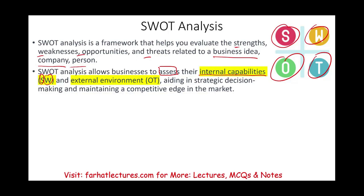Strengths and weaknesses are internal capabilities of the business, while the external environment — looking at opportunities and threats — represents the external side. Together, this is going to help with strategic decision-making and maintaining a competitive advantage in the market.